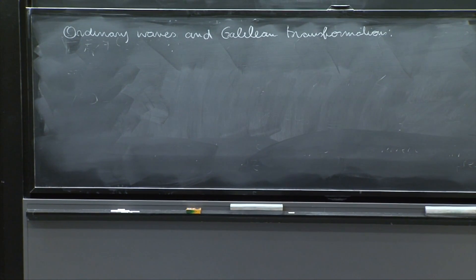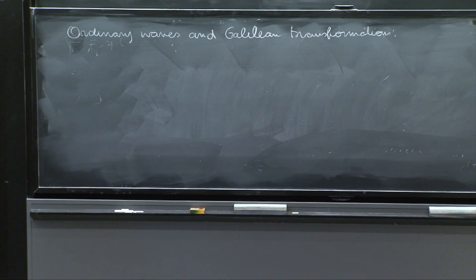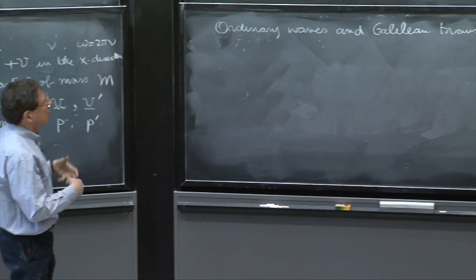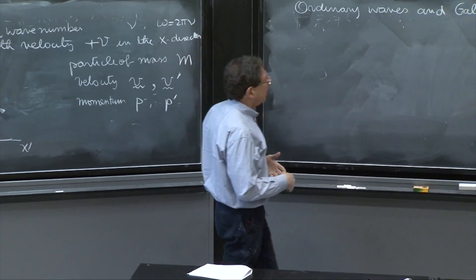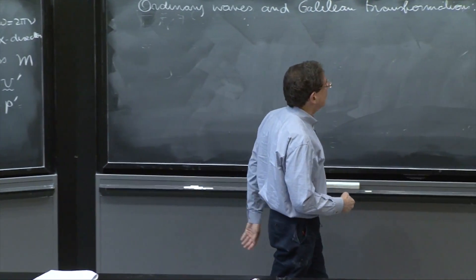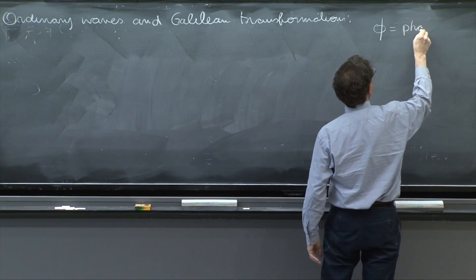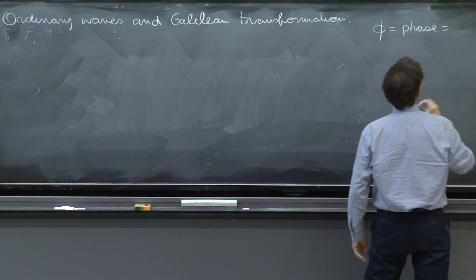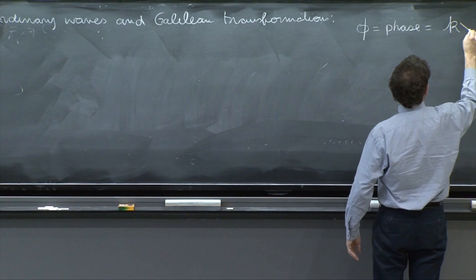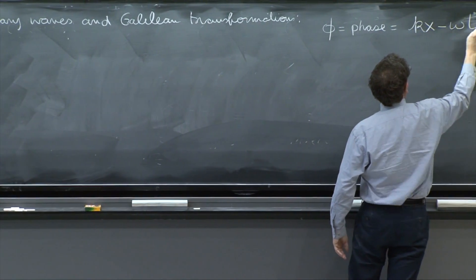When you have a wave, as you probably have seen many times before, the key object in the wave is something called the phase of the wave. And it's controlled by this quantity kx minus omega t.